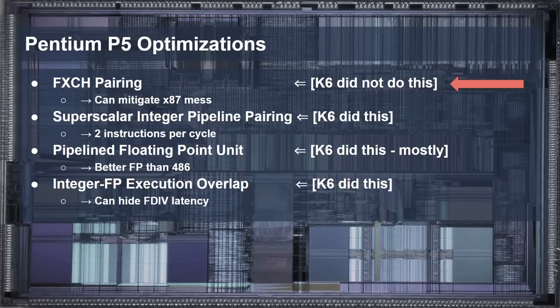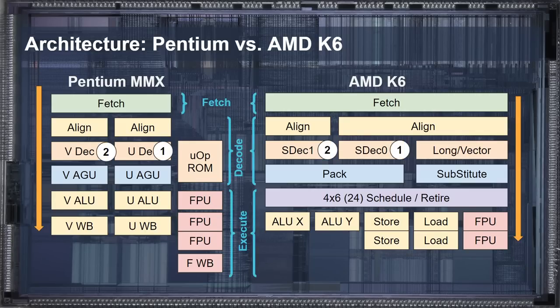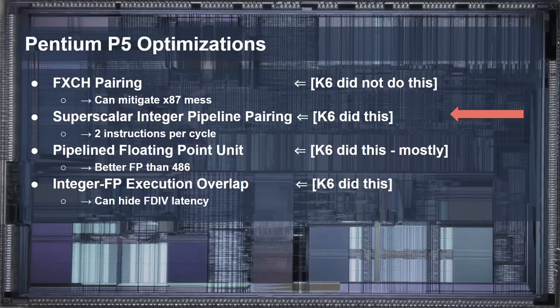Given that f-exchange couldn't account for the entire performance difference between the Pentium and K6, something else must be going on. The next optimization point was the superscalar integer pipeline in the Pentium. Here is a comparison of the Pentium MMX and the AMD K6 — the Pentium MMX was chosen since it is a little closer to the K6 than the Pentium P5 due to the included instruction queue. Both processors follow the same traditional order of fetch, decode, and execute, with differences increasing as you go further down the pipeline. The fetch and decode stages on both processors are essentially identical, both could decode up to two simple instructions per cycle, and both had two ALUs which could execute both instructions in parallel. Therefore, this wasn't one of the possible causes for the performance difference.